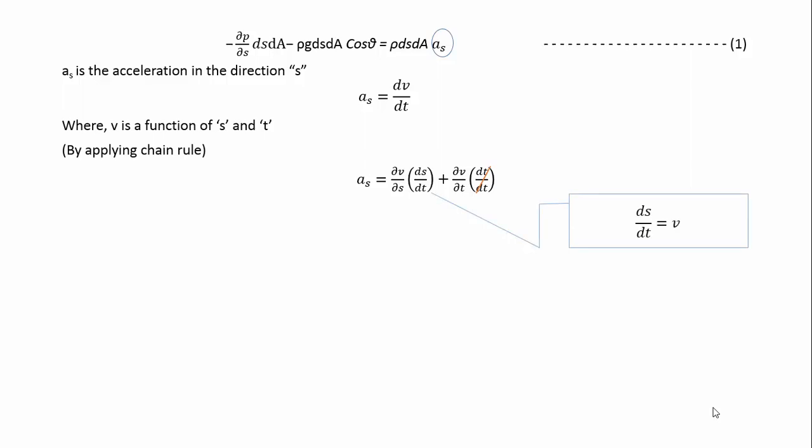Here, dS by dT is the velocity. And if you assume the flow as steady, the velocity will not change with respect to t.